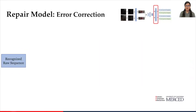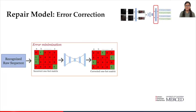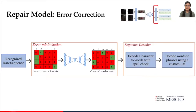The Error Correction module predicts and automatically corrects potential recognition errors made by the recognizer. It comprises two sub-modules: an Error Minimization module that corrects potential errors in the recognized character sequence using a deep denoising autoencoder, and a Sequence Recoder module that converts the corrected character sequence to meaningful word sequences using a spell checker and a custom language model. Both sub-modules were evaluated and refined based on empirical studies.